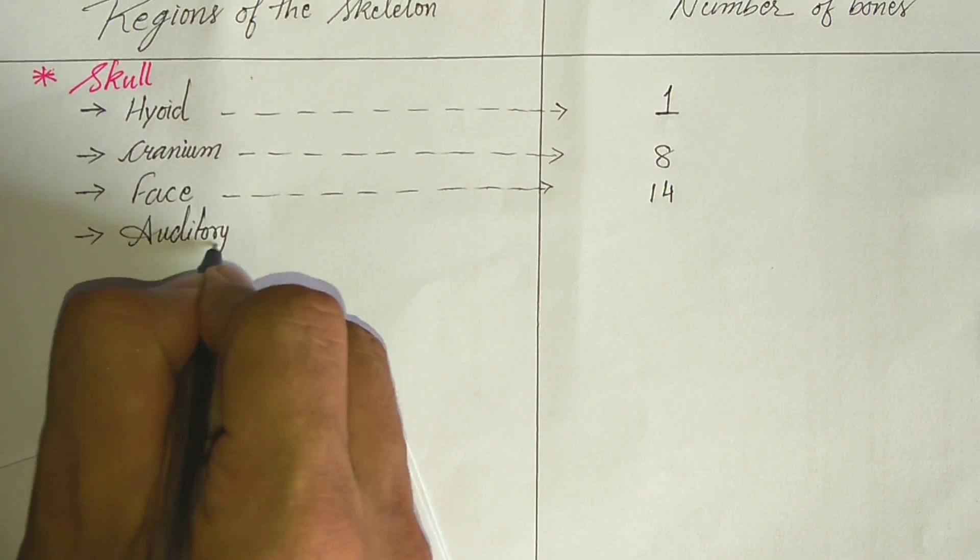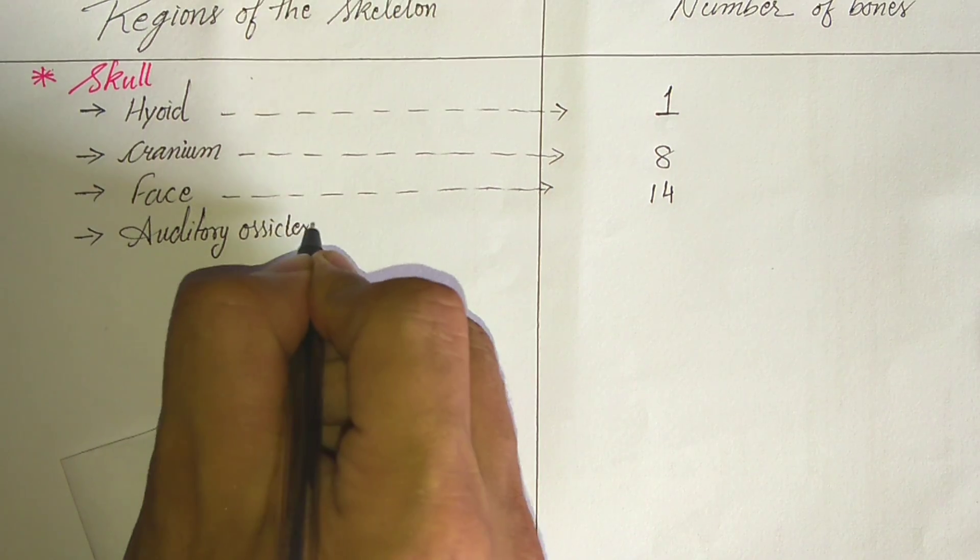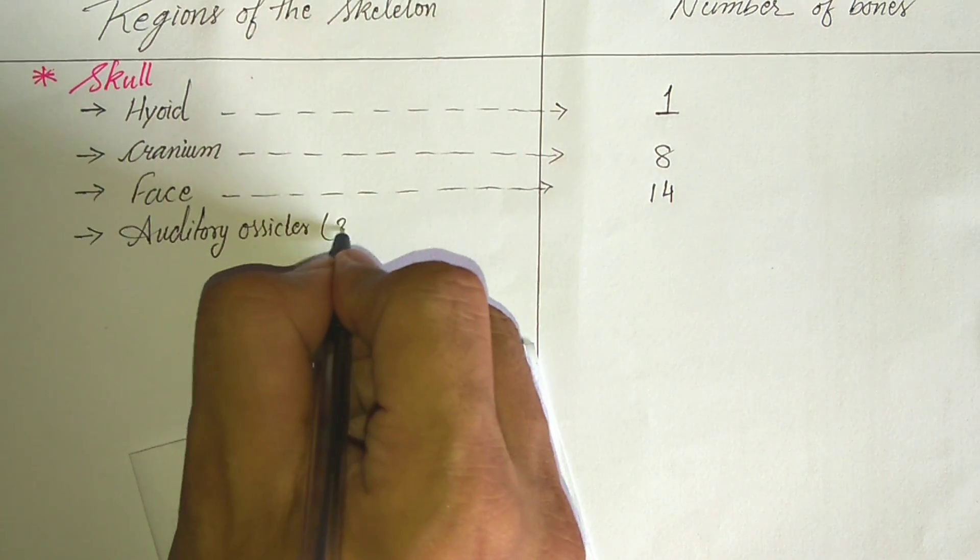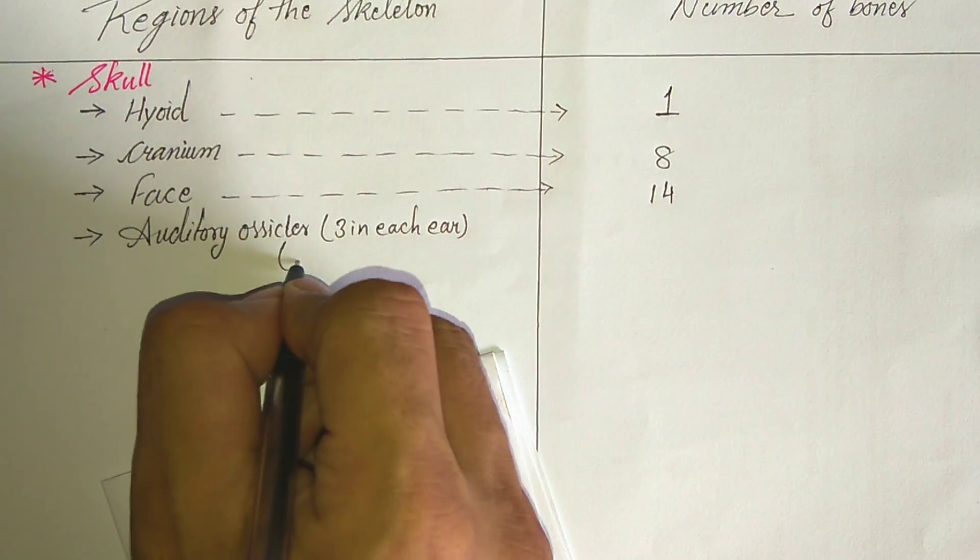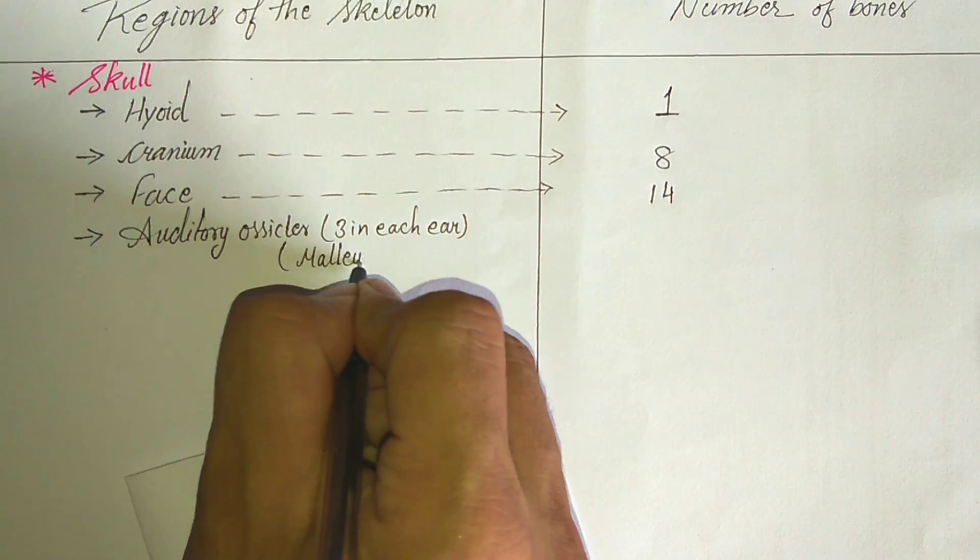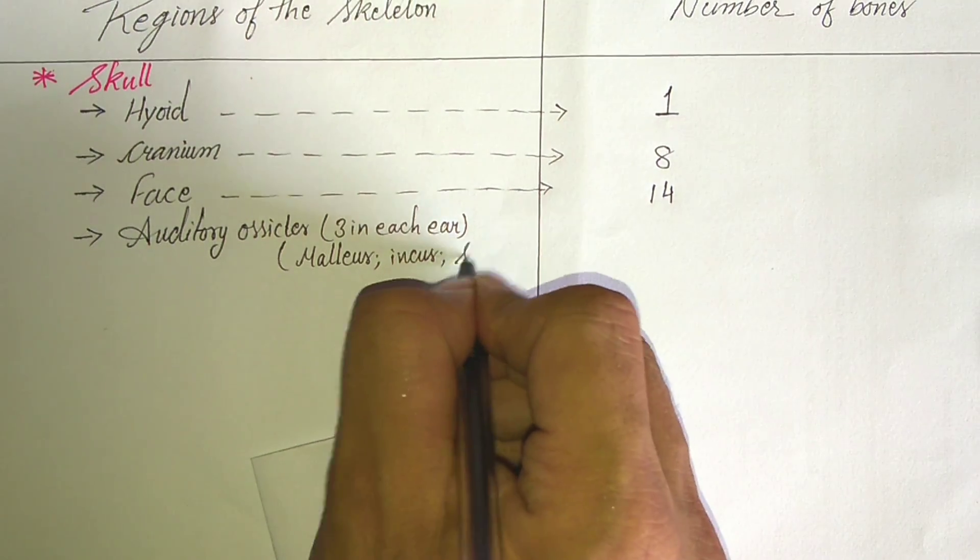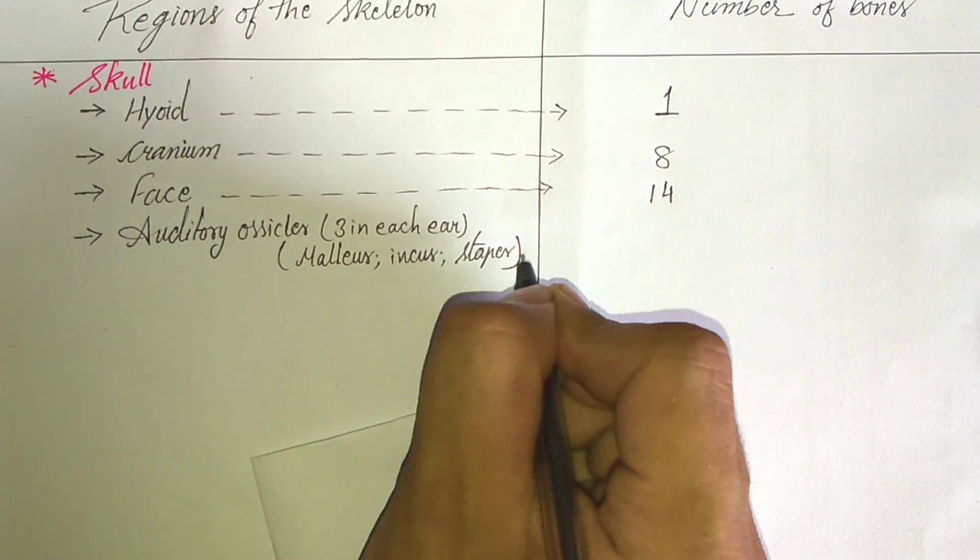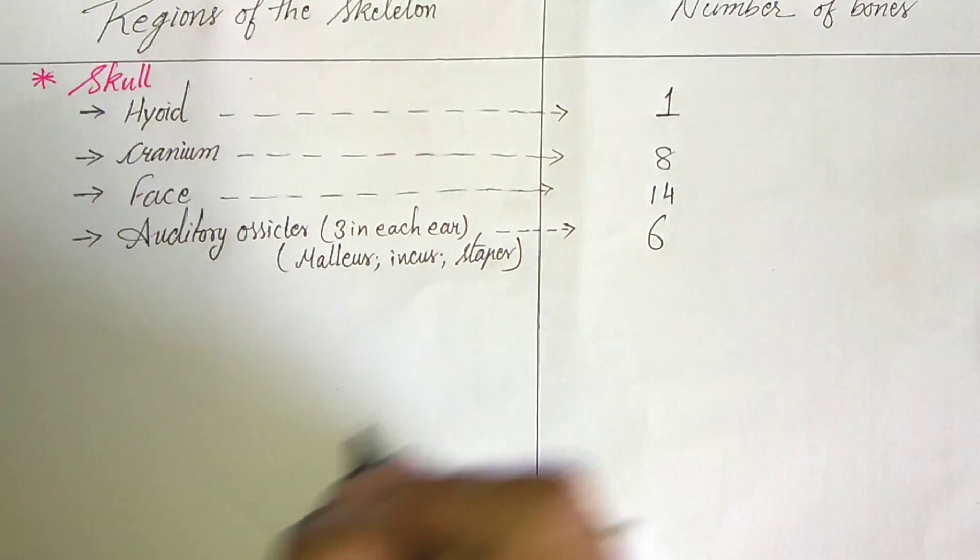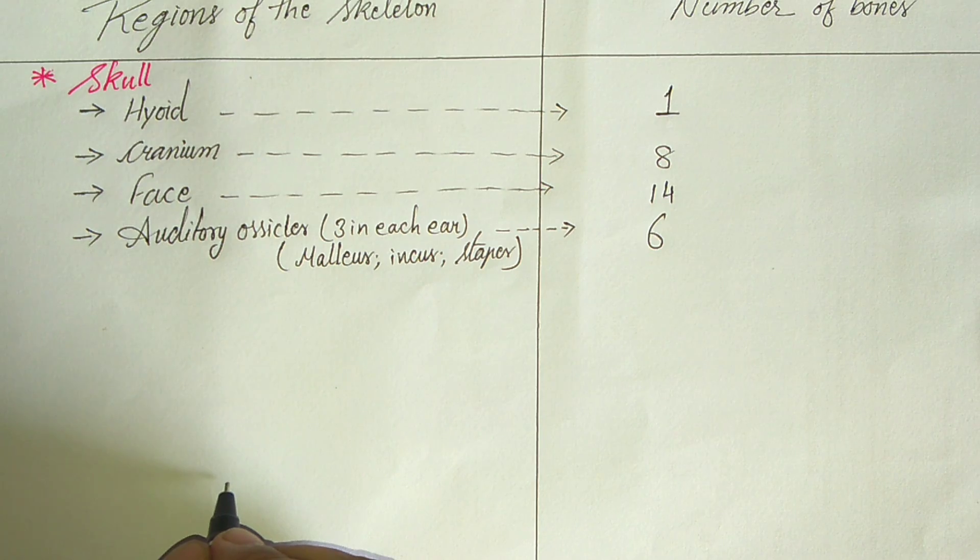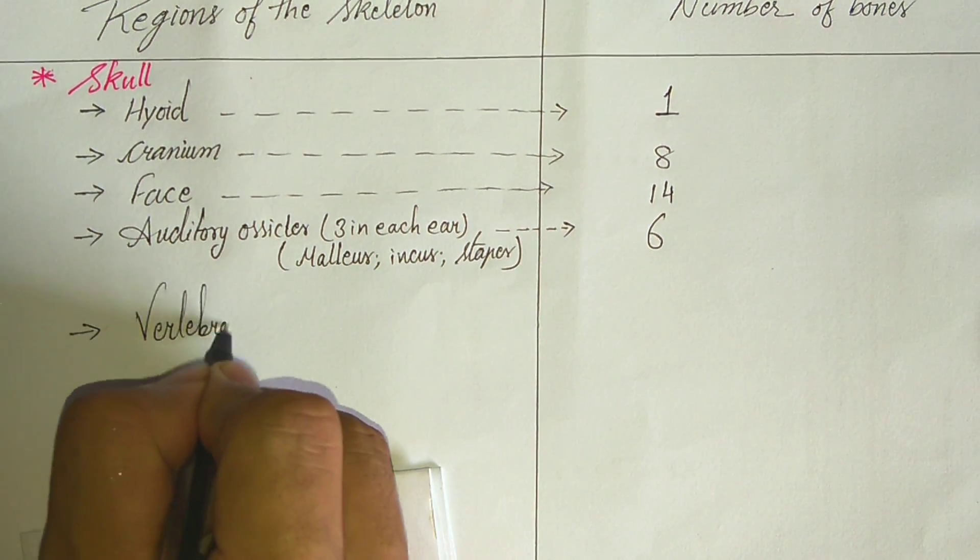Now the auditory ossicles, three in each ear. Malleus, incus and stapes. These are the three bones present in the middle ear. So total six bones are present, six auditory ossicles are present.